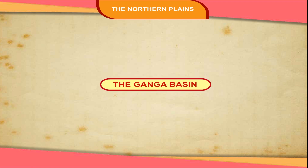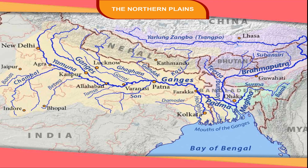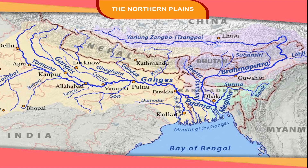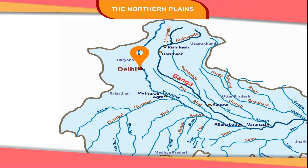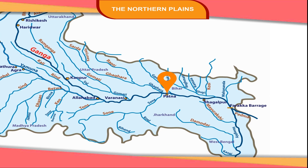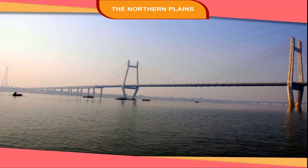The Ganga Basin lies to the east of the Satlaj basin. It stretches from Delhi and Uttar Pradesh to Bihar and ends at West Bengal. The area of this basin is watered by the rivers Ganga, Yamuna and their tributaries.